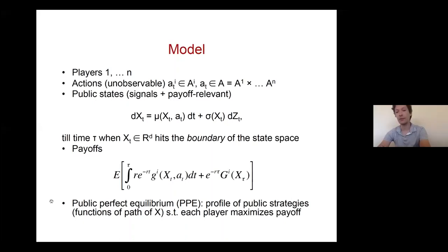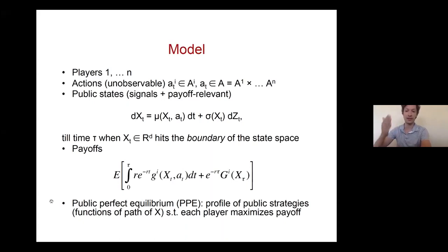The boundary is like an absorbing state: when the state hits it, the game ends. This is important because in a repeated game where players try to sustain cooperation, they can only provide incentives to each other up to the end of the game's horizon. When there is an end of horizon, that limits the players' ability to provide incentives.